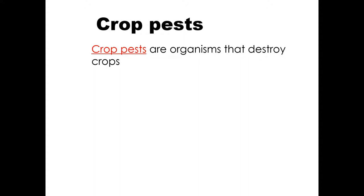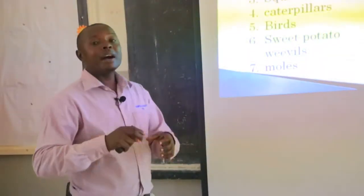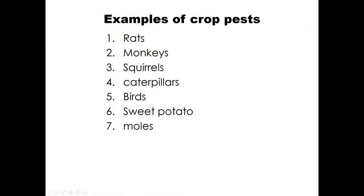Let's give examples of crop pests. We have what we call field pests and storage pests. Field pests are pests that attack crops in the gardens — in the field where crops are grown. Storage pests are pests that attack crops in the stores, granaries, or silos.